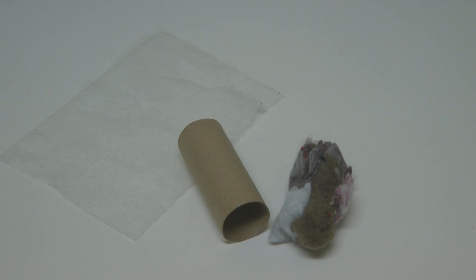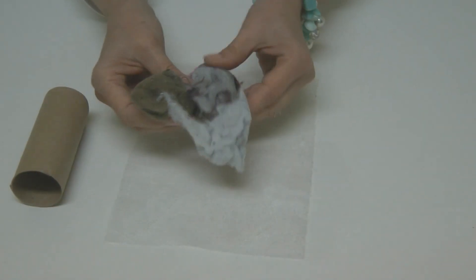Hi, it's AlaskaGranny. Are you looking for a way to make free fire starters from things you have around the house? Begin with things you find in the trash in your bathroom and your laundry room. Take an empty toilet paper roll, some dryer lint, and an old dryer sheet.